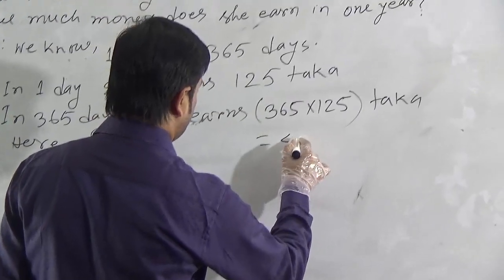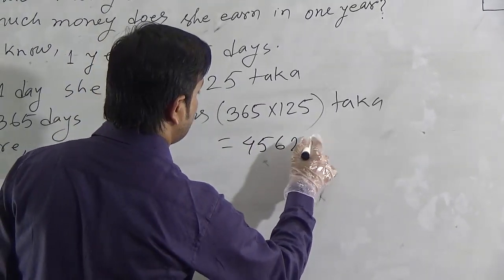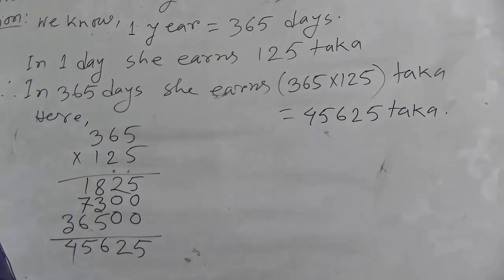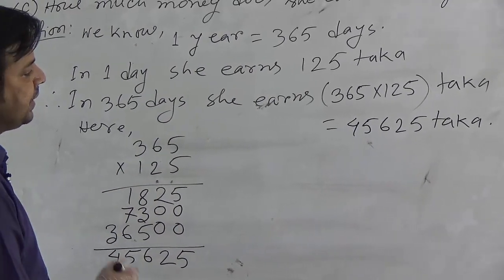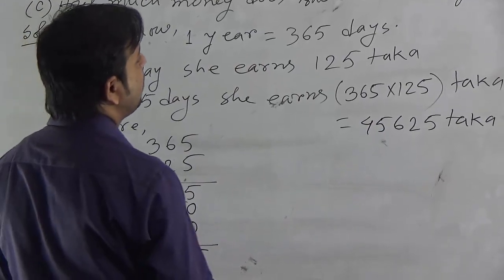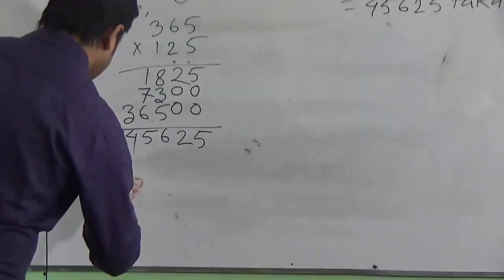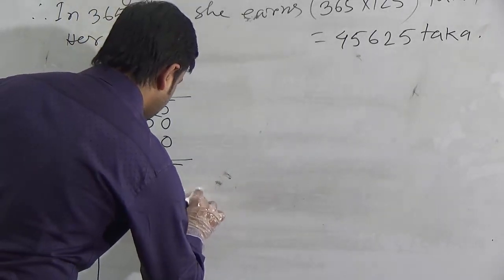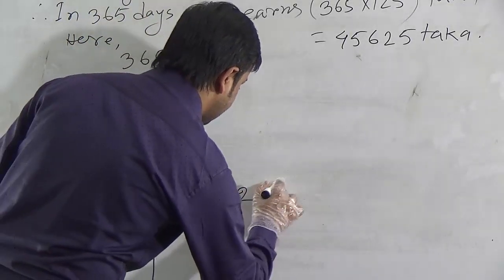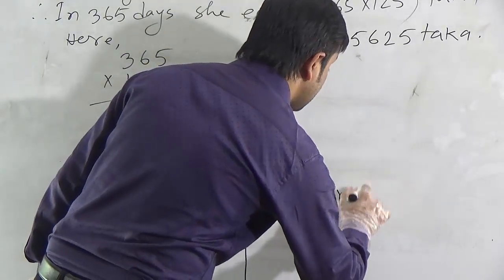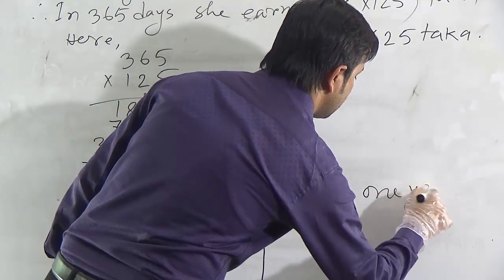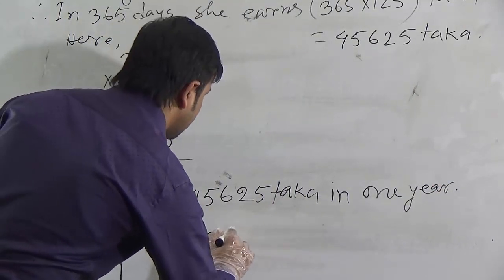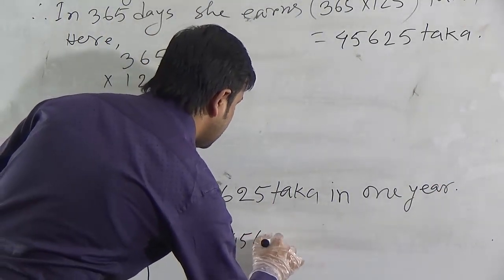Now, we can write the product is 4, 5, 6, 2, 5. It means that she earns 45,625 Taka in 1 year. Therefore, she earns 45,625 Taka in 1 year. So, our required answer is 45,625 Taka.